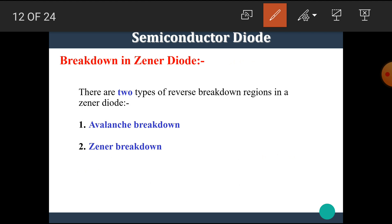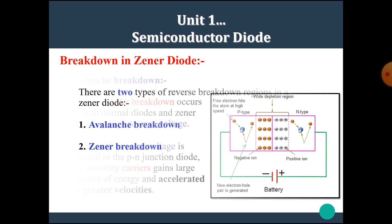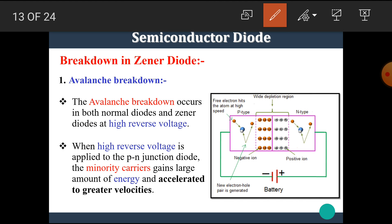There are two types of reverse breakdown regions in a Zener diode: the first is avalanche breakdown and the second is Zener breakdown. This is a very important point in the Zener diode, and exam questions may arise about what is meant by avalanche breakdown and Zener breakdown, or what is the basic difference between them.